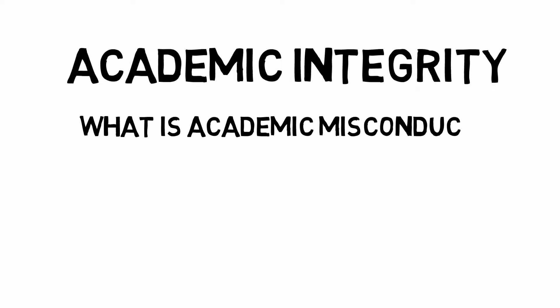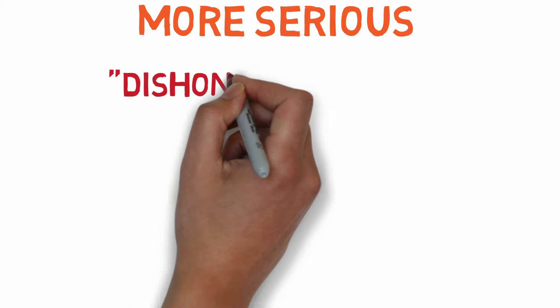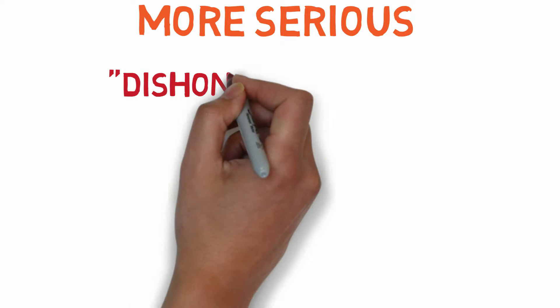What is Academic Misconduct Category C? Category C is more serious. This is when there is evidence of dishonest practice, such as plagiarism, copying or collusion.